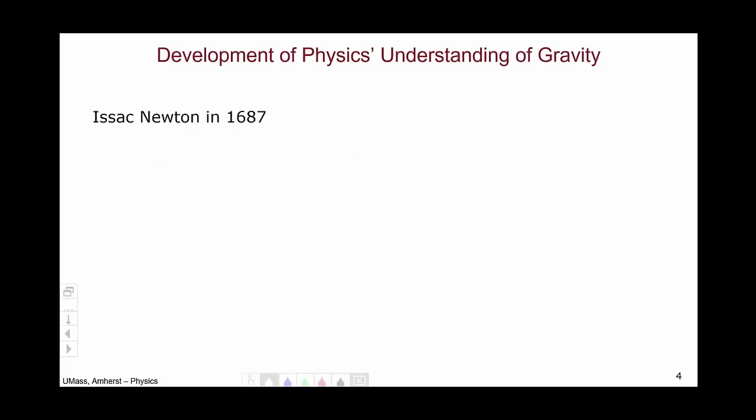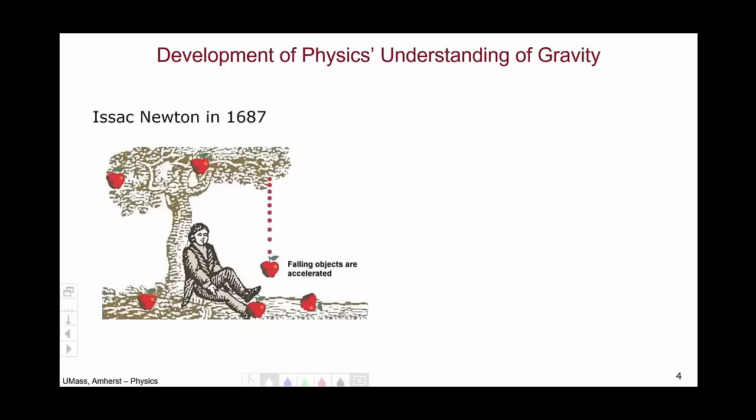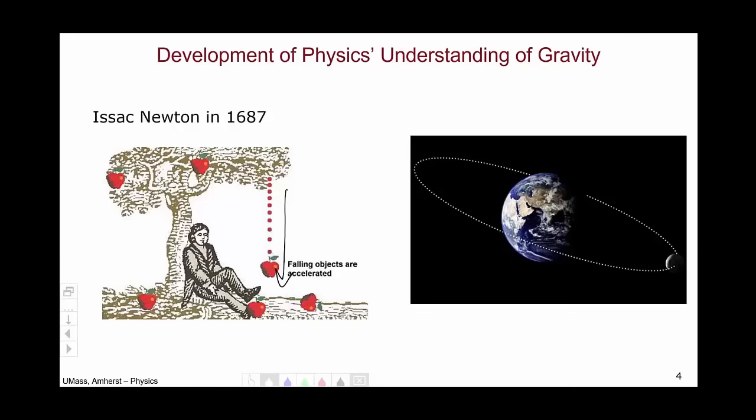Let's think a little bit about the history of physics's understanding of the force of gravity. The first real description comes from Isaac Newton in 1687. Isaac Newton was the first person to think about the fact that the same force that causes an apple to fall from a tree keeps the moon in orbit around the Earth. Both are consequences of the force of gravity.